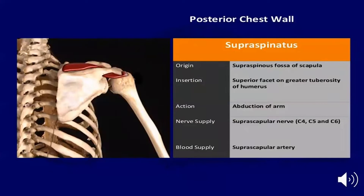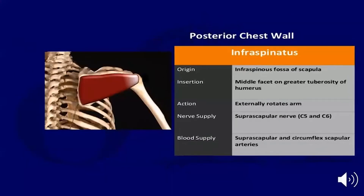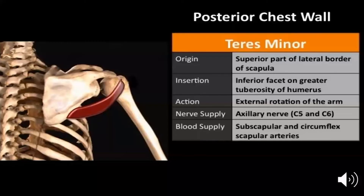The supraspinatus arises from the supraspinatus fossa of the scapula, inserted on the superior facet of the greater tuberosity of the humerus, and is an abductor of the arm. The infraspinatus arises from the infraspinous fossa of the scapula, inserted on the middle facet of the greater tuberosity, and is an external rotator. Finally, the teres minor arises from the superior part of the lateral border of the scapula, inserted on the inferior facet of the greater tuberosity, and is also an external rotator of the arm.